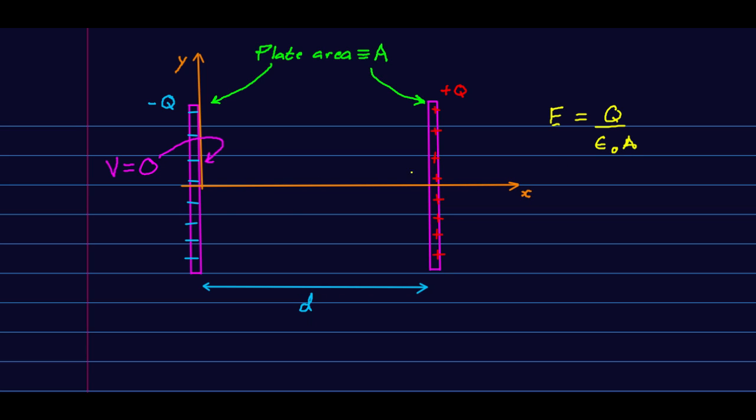And that tells us that the force on any charge we put in here will be constant. Well, I want to think about a negative charge. So here is a negative charge that we're starting over near this plate. And we know it's going to accelerate. It's going to be pushed away from that plate and attracted to this one. It's going to wind up over here. And by the time it gets here, it's going to be moving to the right at some speed.